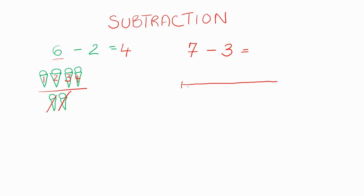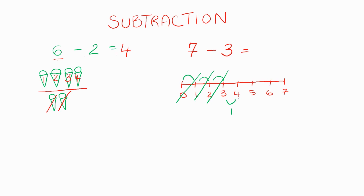So let me draw a rope here and score it to 7. Now imagine if 3 inches were cut off — so let's score that out: 1, 2, 3. So let's count what we have left: there's 1, 2 inches, 3 inches, and 4 inches. So I'm left with only 4 inches of rope. So 7 minus 3 is 4.